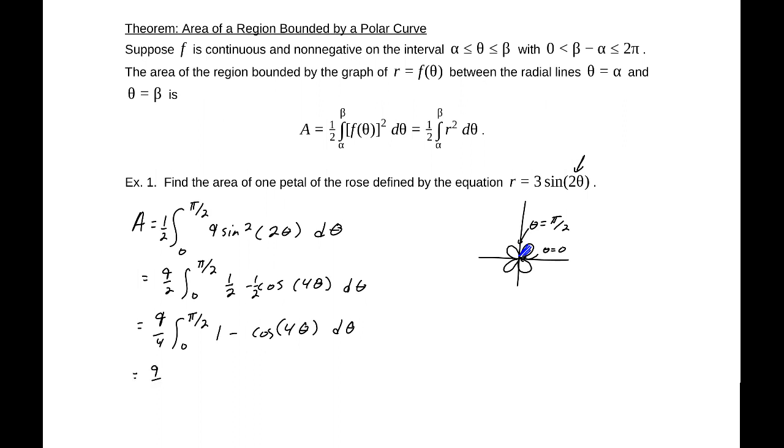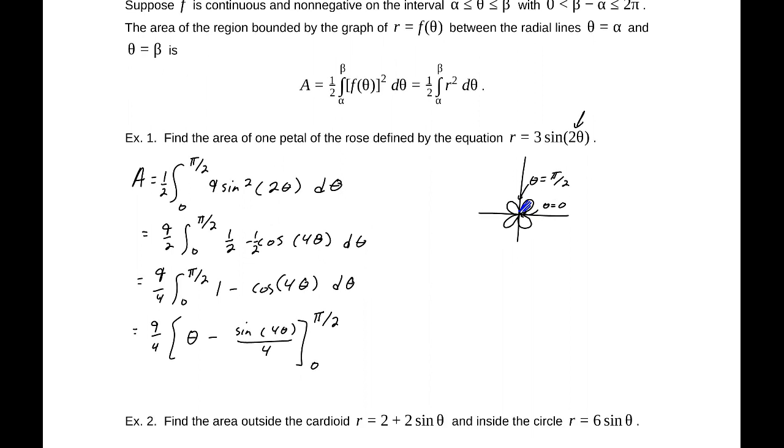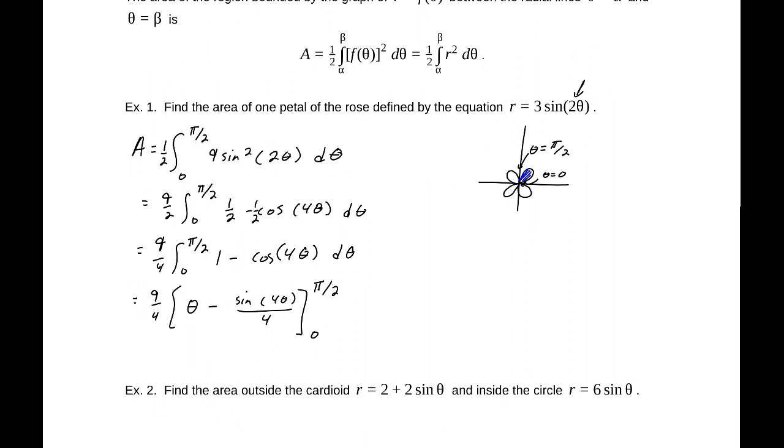This is going to be 9/4 times [θ - sin(4θ)/4] evaluated from 0 to π/2. That will be 9/4 times π/2, and evaluating that at 0 is 0, so we get 9π/8. And that is the area of that one petal of that rose.